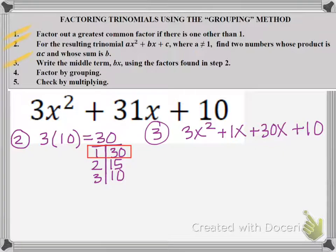That was step 3. Now I'm moving on to step 4, where I'm going to factor by grouping. So I take the four terms and I split them into two pairs of two terms. So the first two terms are 3x squared plus 1x. They have a GCF of x. If I factor out x, it leaves behind 3x plus 1.